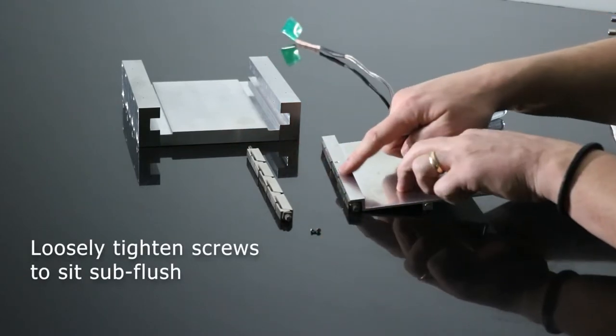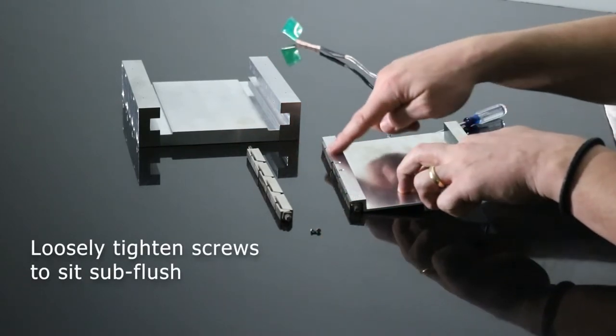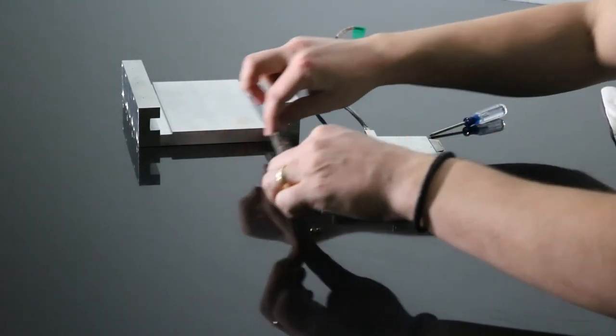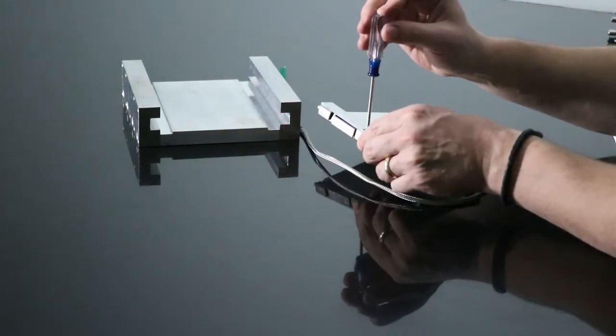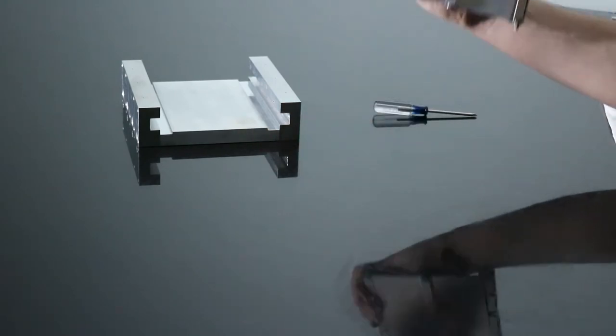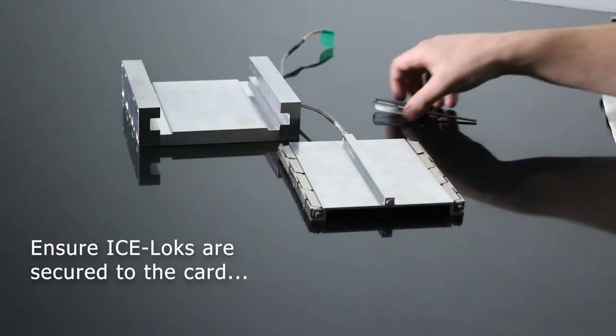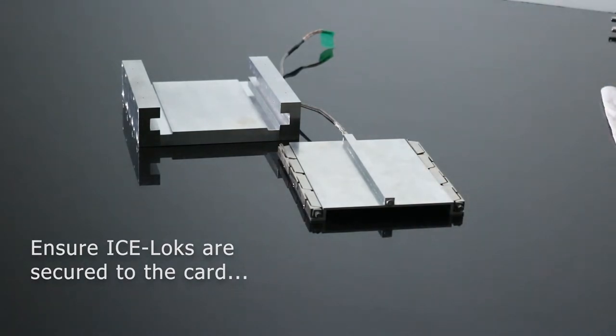Also ensure the screws are sitting sub-flush so they don't interfere with the contact interface. When both ice locks are mounted on the card, the card is ready to be inserted into the chassis.